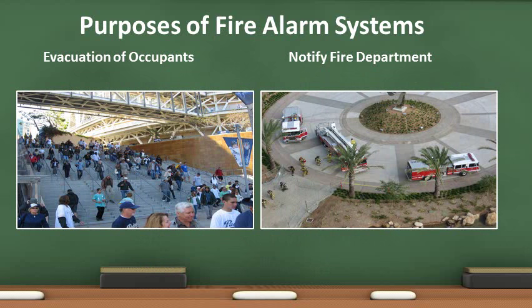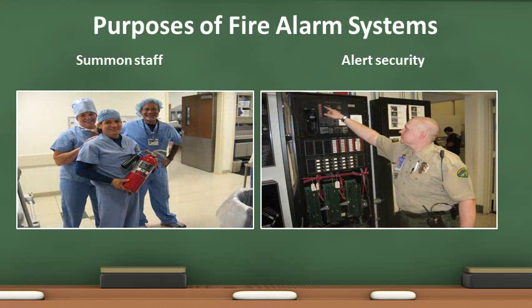Fire alarm systems serve multiple purposes. They alert the occupants of a fire and assist with evacuation, reducing the chance of rescue issues. Alarm systems also provide early notification, which allows the fire department to arrive while the fire is still contained. Fire alarm systems summon staff, which allows on-site personnel to remove patients and occupants to a safe location or to evacuate the building.